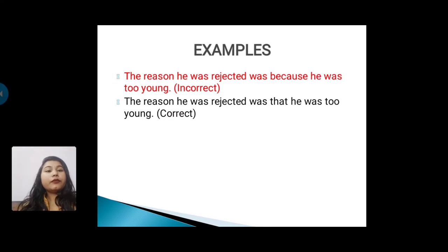For example, the reason he was rejected was because he was too young. This is an incorrect sentence. The reason he was rejected was that he was too young. So, this is our correct sentence.